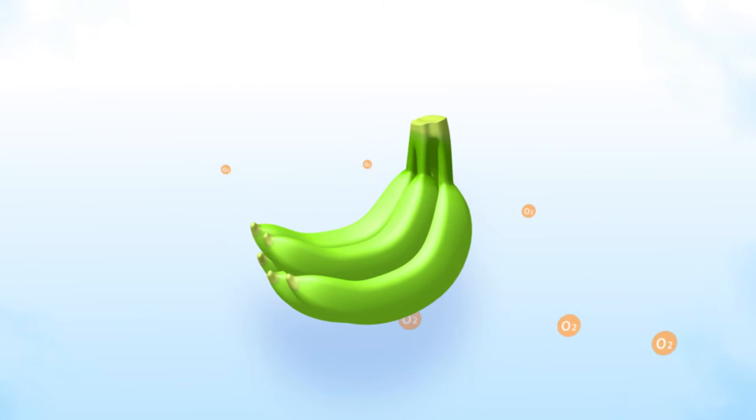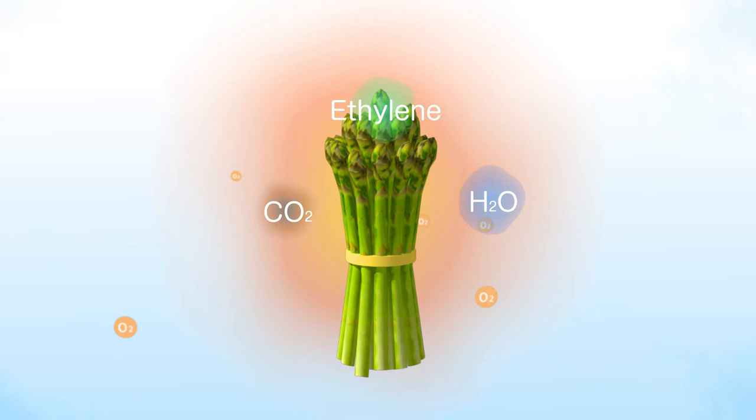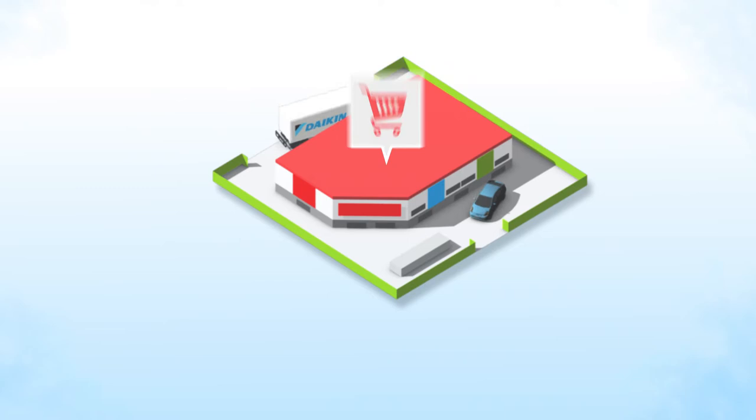Perishables like fruit and vegetables continue to breathe after harvest. They consume oxygen while releasing CO2, water content, as well as ethylene. Without a carefully controlled environment, it's not possible to ship them over long distances, as they would spoil by the time they reach their destination.